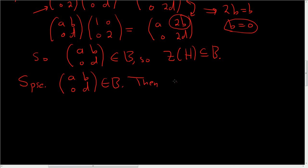Then, what does it mean to be in B? That means a equals d, and that's not equal to 0, and b equals 0. So let me write our matrix down another way.